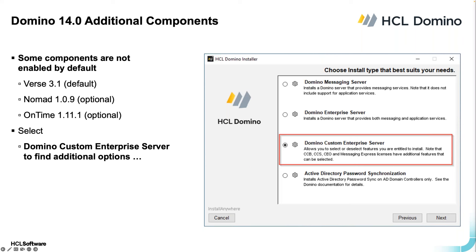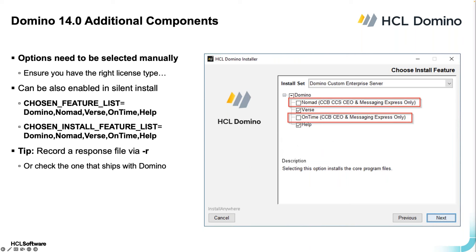However, even though these components are part of the Domino server installer, you need to enable them by choosing the custom option — they are not enabled by default. Nomad and OnTime are two optional components. In the Domino server installer, if you choose the custom enterprise server option, you'll get a dialog where Nomad and OnTime are not checked by default — just tick the box and they will be installed along with the Domino server. There are also options for silent installation using a pre-recorded response file, which is useful for automating installation across a larger number of servers.